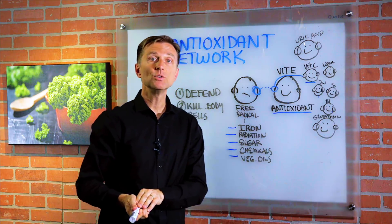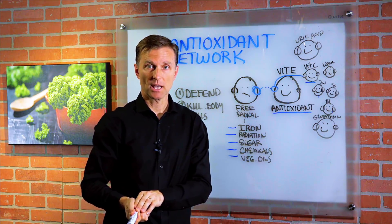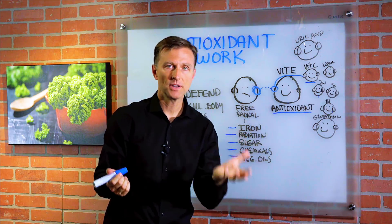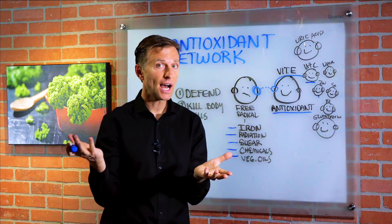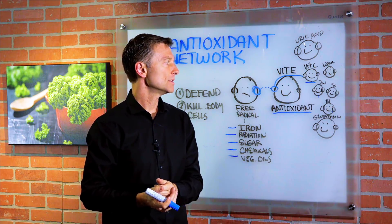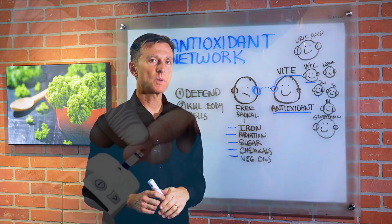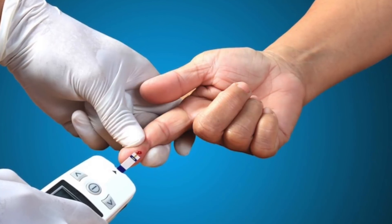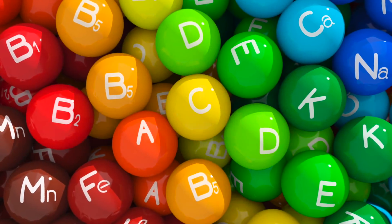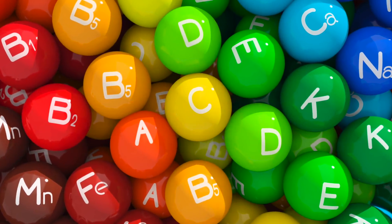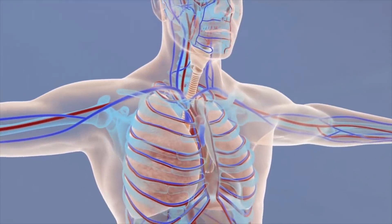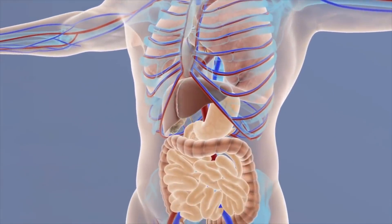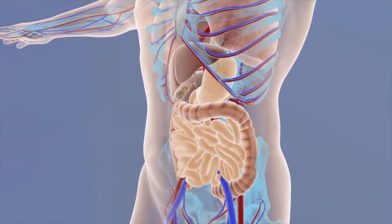If you have two diabetics, for example, and one is B1 deficient while the other is not, the one who is B1 deficient will experience the complications of diabetes. These antioxidants protect your body from damage caused by free iron, radiation, sugar, chemicals, and vegetable oils.